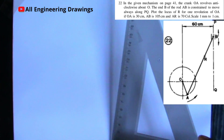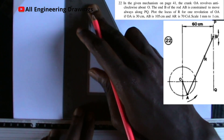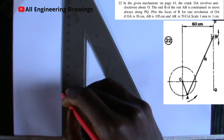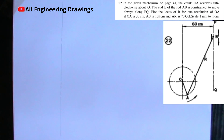First we have to draw a vertical line. The question says OA is 30 cm. They said scale 1 mm to 1 cm, so since OA is 30 cm we use 30 mm on our ruler. OA is the radius of the circle, so we take 30 mm from our ruler.